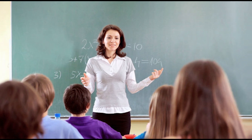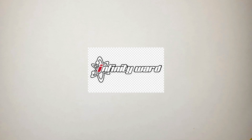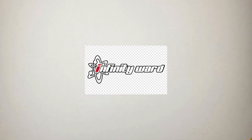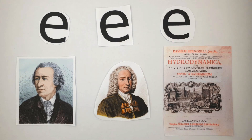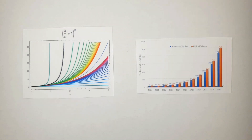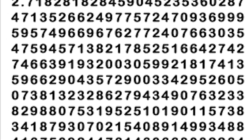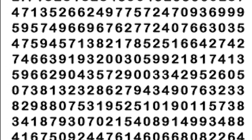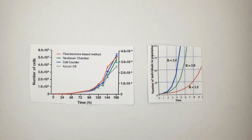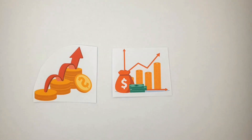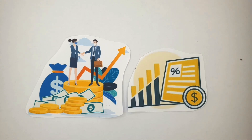But today we're going to talk about a lesser-known but still-relevant constant: the number e. Like π, Euler's constant is an irrational number — its decimals go on and on and never stop. The mathematical constant e is known as the prime rate of growth, which is shared by all continuous growth processes.